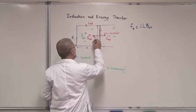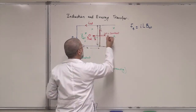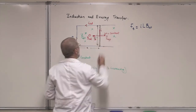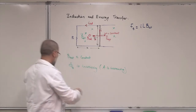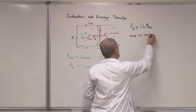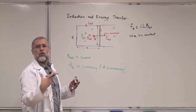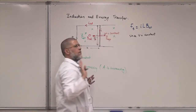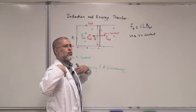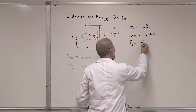Since this rod is moving at constant speed, FB and F applied are equal in magnitude and opposite in direction. F applied equals I·L·B. I don't want to accelerate it — I want to move it at constant speed. Otherwise, my F applied will be larger, and the work I have to do will be larger.